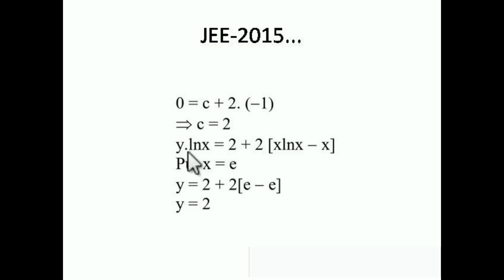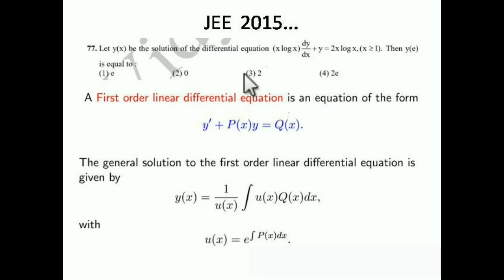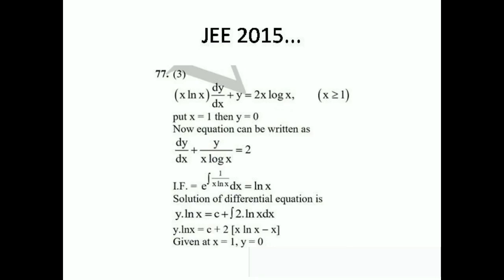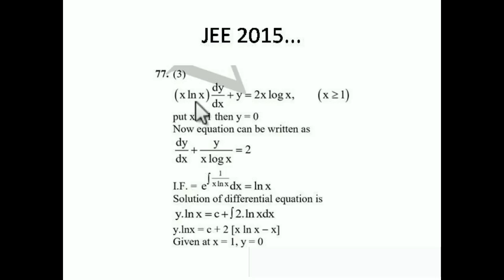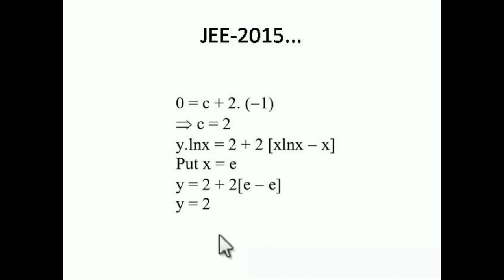Now put x = e to find y(e): y·ln(e) = 2e·ln(e) − 2e + 2. Since ln(e) = 1, we get y = 2e − 2e + 2 = 2. So the answer is y = 2, and option number 3 is correct. Note: the question had a misprint omitting the condition y(1) = 0, but we can infer it by substituting x = 1, since ln(1) = 0 forces y = 0.